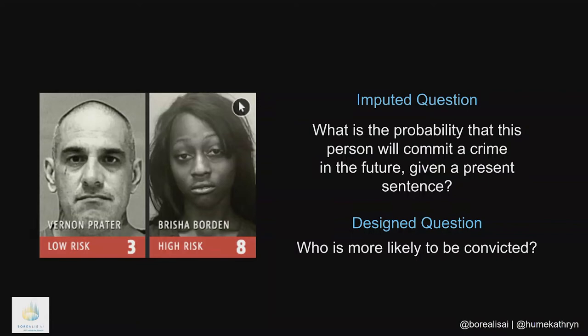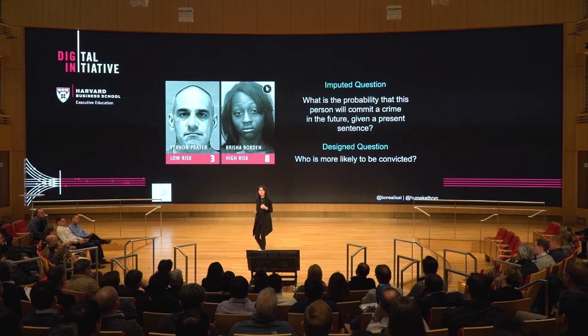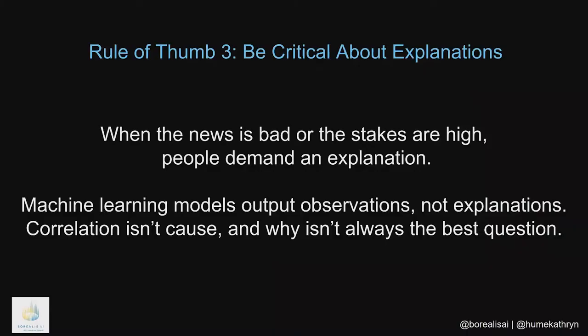A similar example comes from the realm of recidivism prediction — a system reported by ProPublica in 2016 that was supposed to help predict whether a particular individual was likely to commit a crime in the future. Seems okay, but if you actually looked at the math, it was really predicting the simple likelihood that person would commit a crime. And going back to social past statistics, you start to see why this system could potentially be racially biased against African-American males based upon trends in the American judicial system.